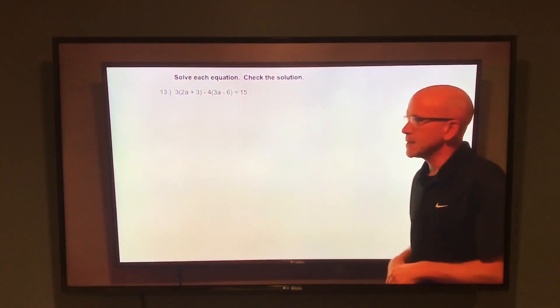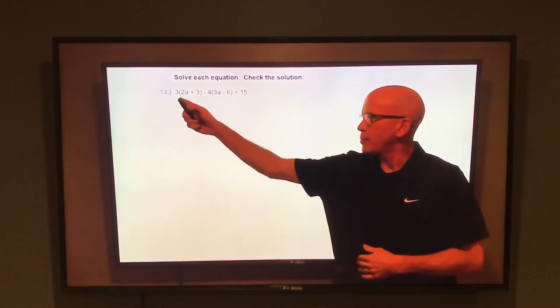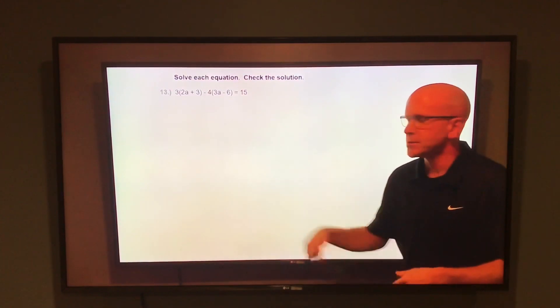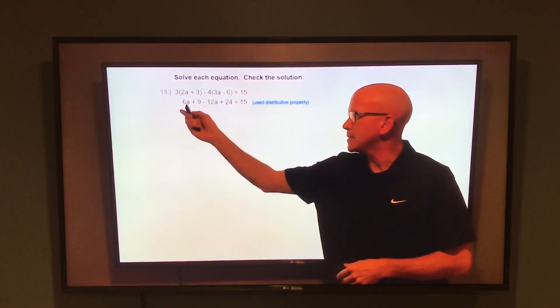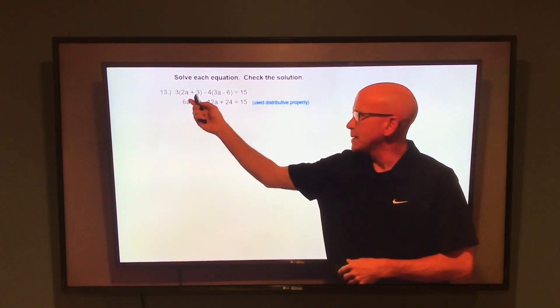When you solve this equation for a, first thing you need to do is use the distributive property with the 3 and also the negative 4. So distribute the 3, take 3 times 2a, that is 6a, and 3 times 3 would be 9.